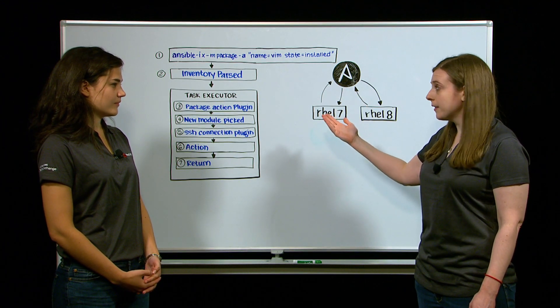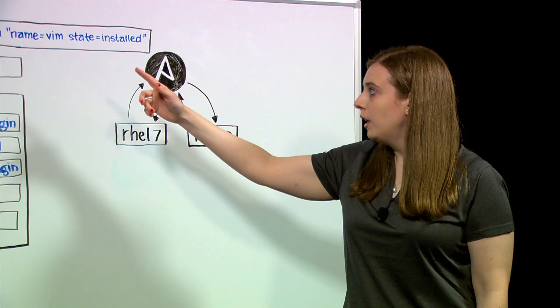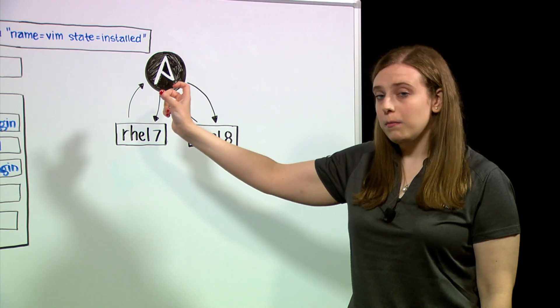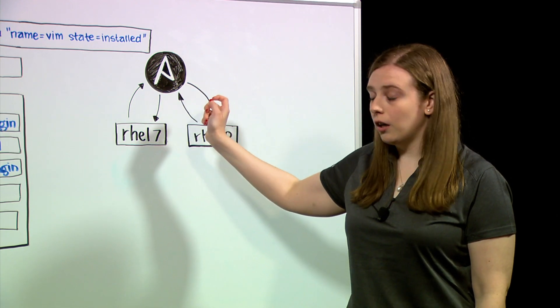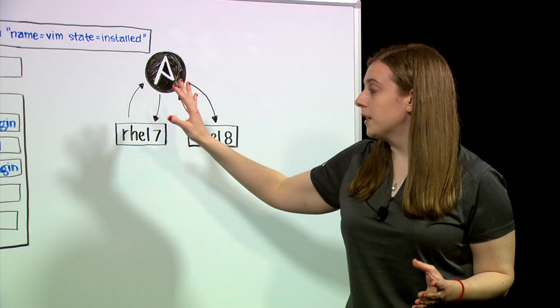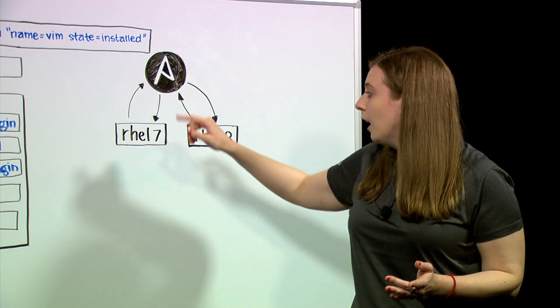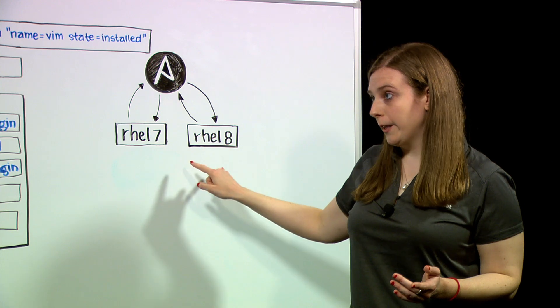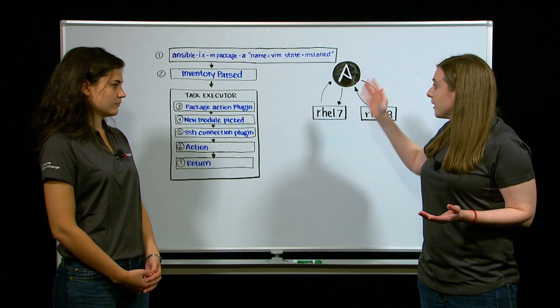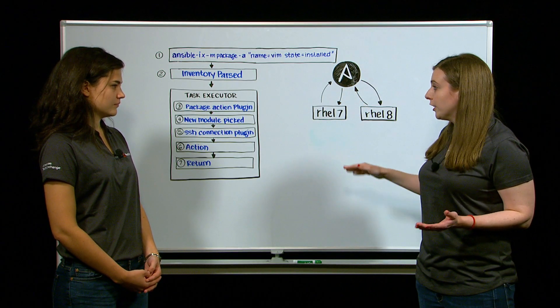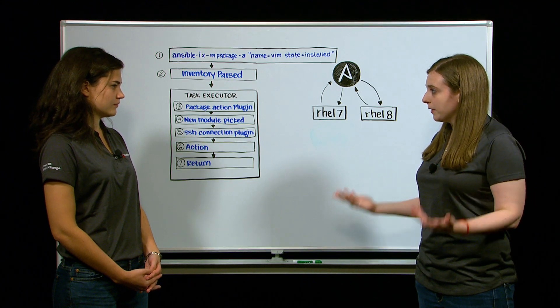So in this specific case, our module is package, and our parameters are name vim and state installed. So what this command is going to do is ensure that vim is installed on all the hosts in our inventory. So I'm going to type this into my terminal. I'm going to hit enter. What's the first thing that Ansible does?